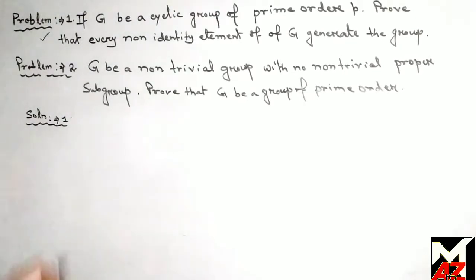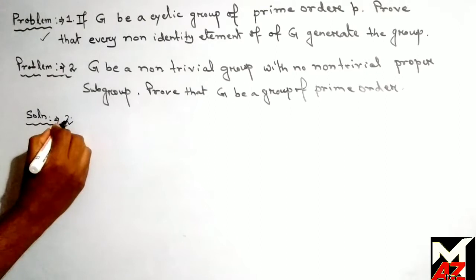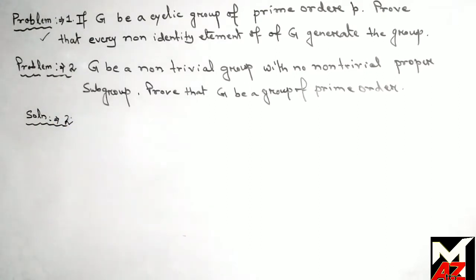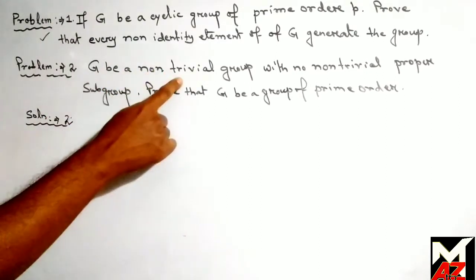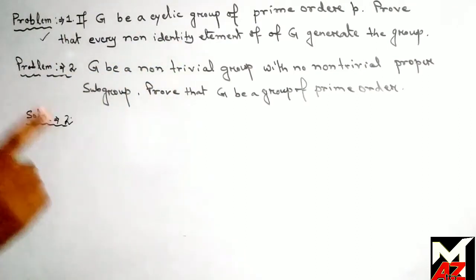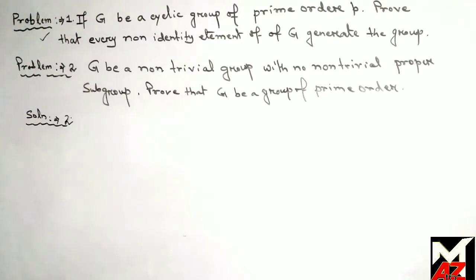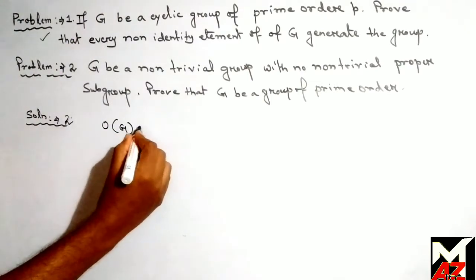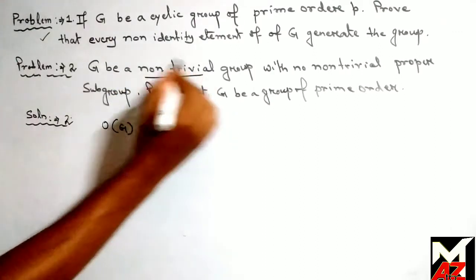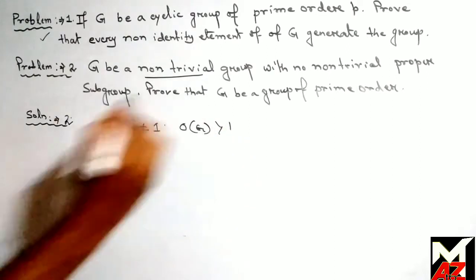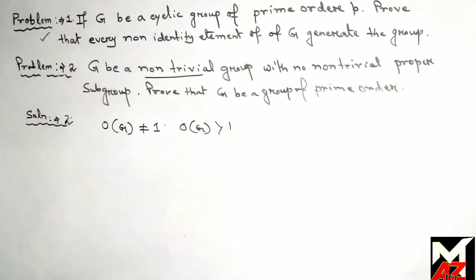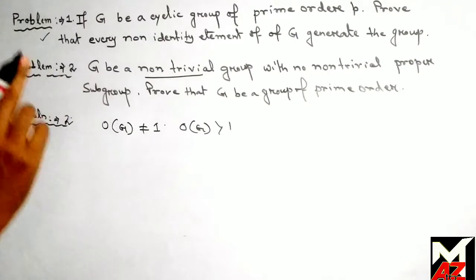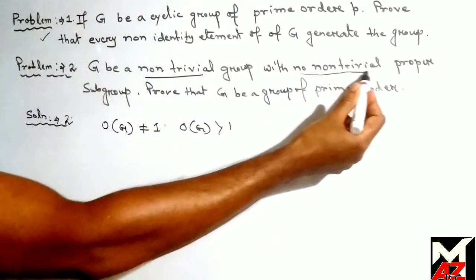Now we go to the second problem. The problem is: let G be a non-trivial group with no non-trivial proper subgroup; prove that G is a group of prime order. It is given that the order of G is not equal to 1, since it is non-trivial, meaning the order of G is greater than 1. It is also given that G has no non-trivial proper subgroup.